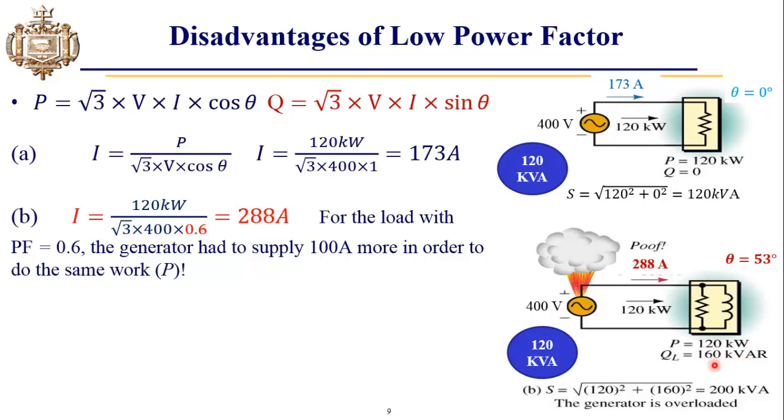By putting these values in the apparent power formula, the apparent power comes out to be 200 kVA. Now you will need 200 kVA of generator to feed the same load.